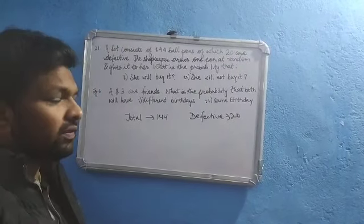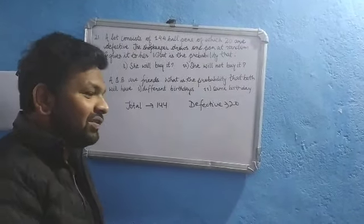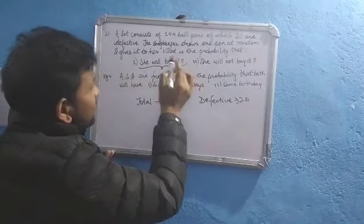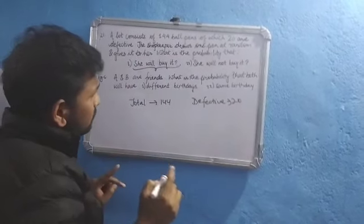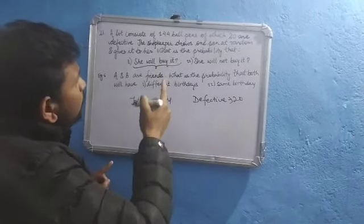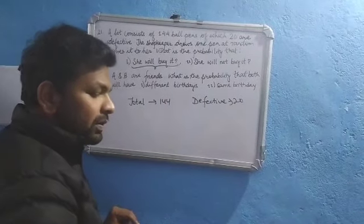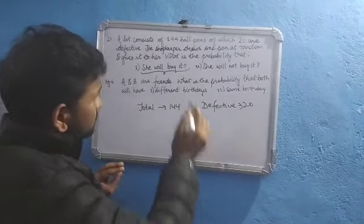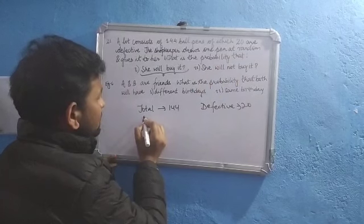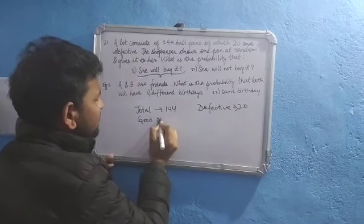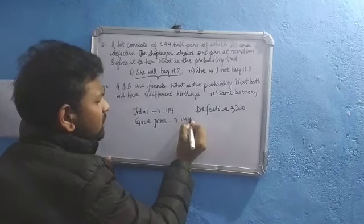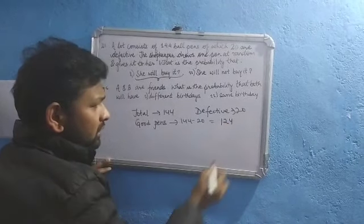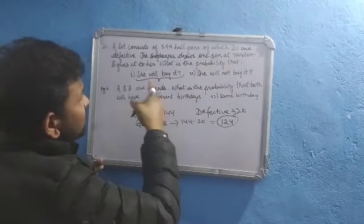If you go to a shopkeeper and buy a pen, and he gives you a defective pen, will you buy? You will not buy. So that is what is being asked in the question. Out of 144 pens, 20 are defective, so good pens — pens which are not defective — are 144 minus 20, which equals 124.